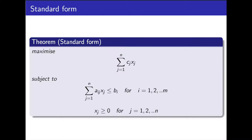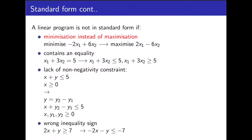Lastly, looking at the bottom line, every variable must be subject to a non-negativity constraint, as described by xj greater than or equal to 0, for j equals 1 to n. We shall now discuss some further details about standard form.